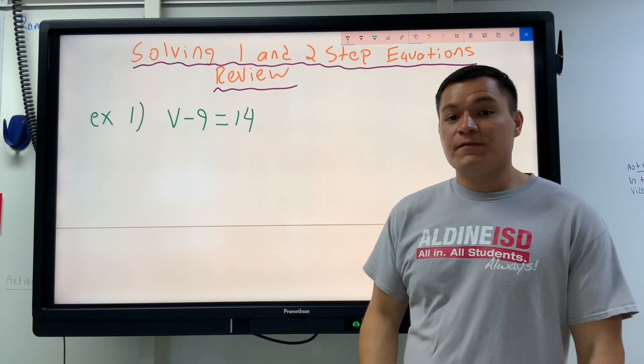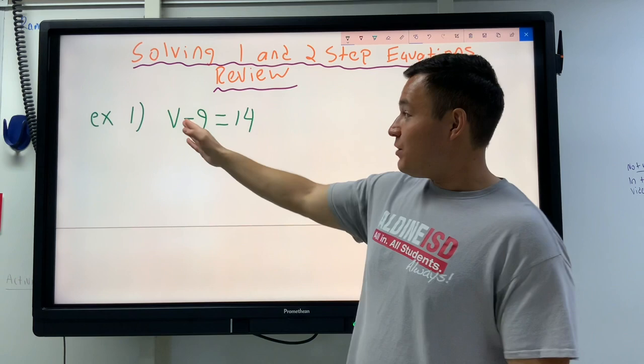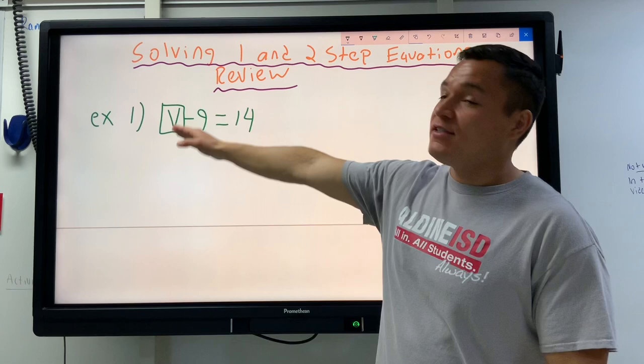We have V minus nine equals 14. The first thing we want to do if we're going to solve this equation is we need to know what we're going to solve it for. We are always going to solve for the letter. We're going to put a box around the letter so that I know that's what I'm trying to solve for.